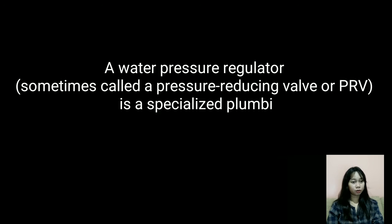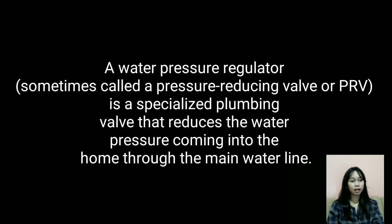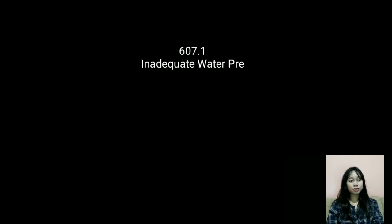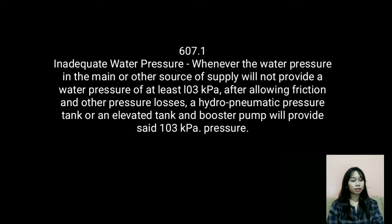A water pressure regulator, sometimes called a pressure reducing valve or PRV, is a specialized plumbing valve that reduces the water pressure coming into the home through the main water line. This valve brings down the pressure to a safe level before the water reaches any plumbing fixtures inside the home. Too much water pressure can cause many plumbing problems, so it is very important to keep the water pressure under control. A water pressure regulator can be essential where the municipal water supply enters the home at very high or irregular pressure.